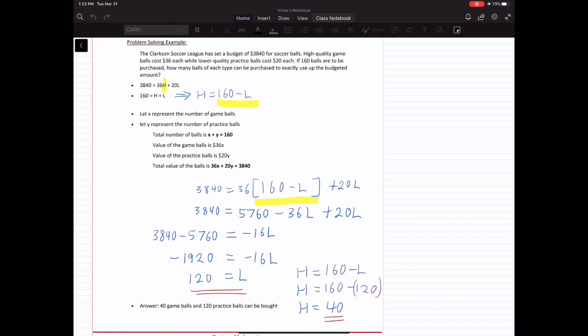First, we need to set up the two equations. The first equation that we have is the 160. We have 160 balls, and there are two types of balls: high-quality and low-quality, H and L. So H plus L has to equal 160. That's the first equation.